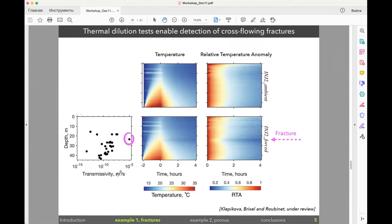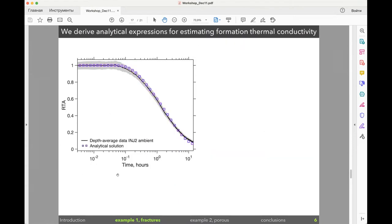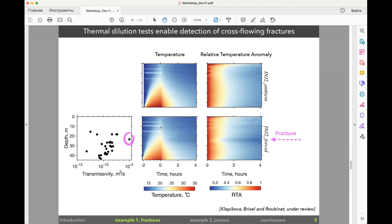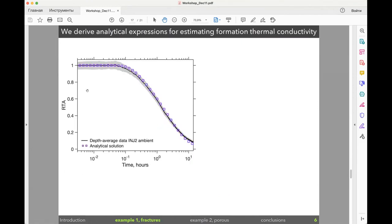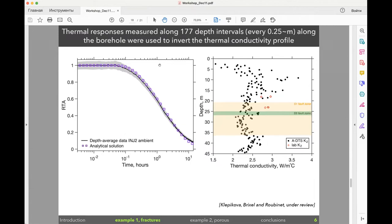We can detect cross-flowing fractures even in such low permeable media. From all other depths where we don't have any fractures, we can extract many temperature transients. One of them is here. These temperature transients we can also use in order to deduce thermal properties of the media, which is very important for geothermal applications. We adapted an analytical solution in order to interpret this transient, and then we can extract from a 45 meter depth borehole around 180 temperature transients and invert them to deduce the thermal conductivity profile all along the well. All these black points are in-situ measurements of thermal properties. We also checked with independent measurements in the lab on small samples that we have very good agreement between lab measurements and in-situ measurements of thermal properties.